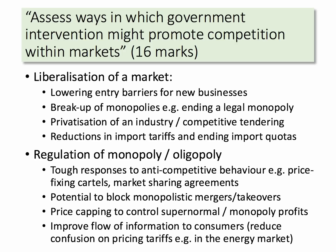A second approach is to regulate — to be tougher on monopolies and oligopolies. So tough responses in terms of fines, possible imprisonment for anti-competitive behaviour which is proven, including price fixing and market sharing agreements — being tough on cartels. There's also the potential for competition authorities to block monopolistic mergers and takeovers. Some people argue there should be a price cap to control monopoly profits, which will help to improve competition. And crucially, improving the flow of information to consumers, particularly in markets where there's a lot of confusion about the best tariffs — there's been a lot of discussion about that in the electricity and gas market in the UK.